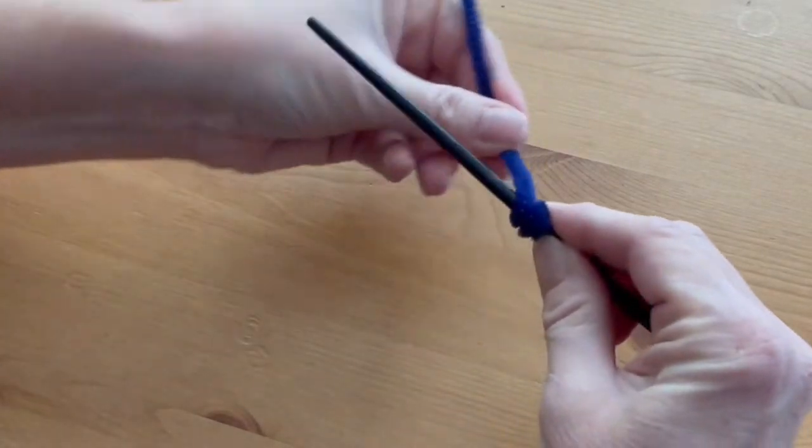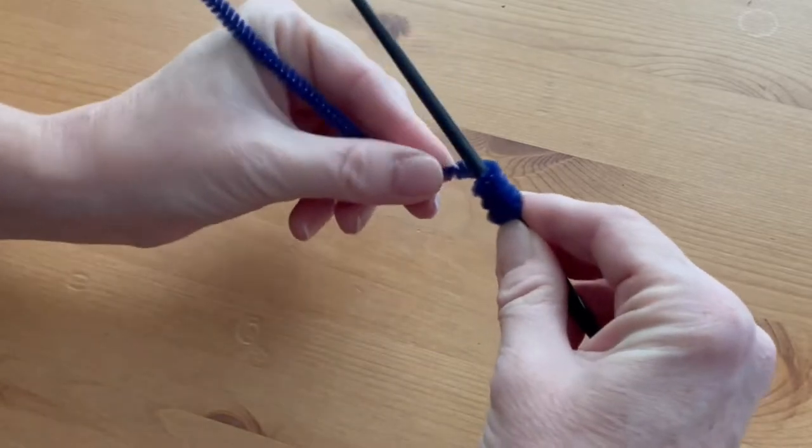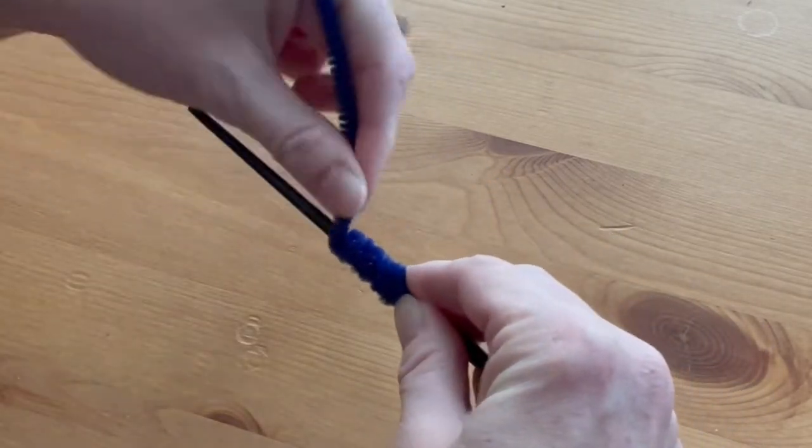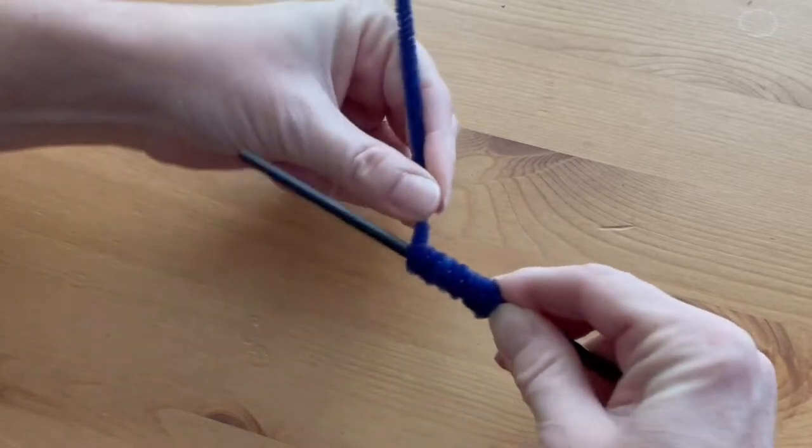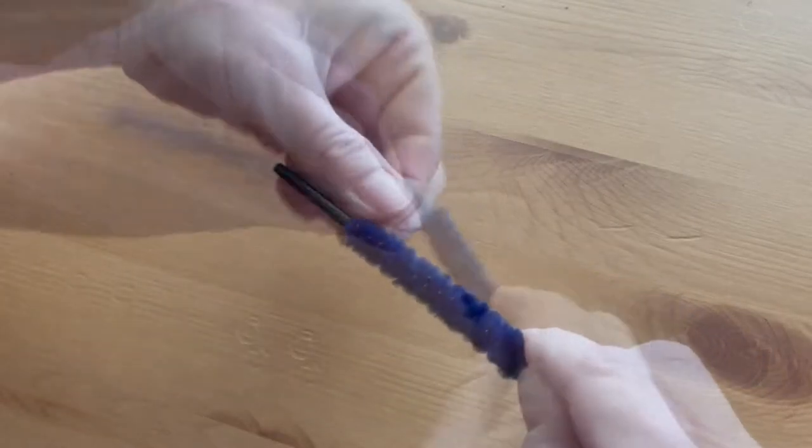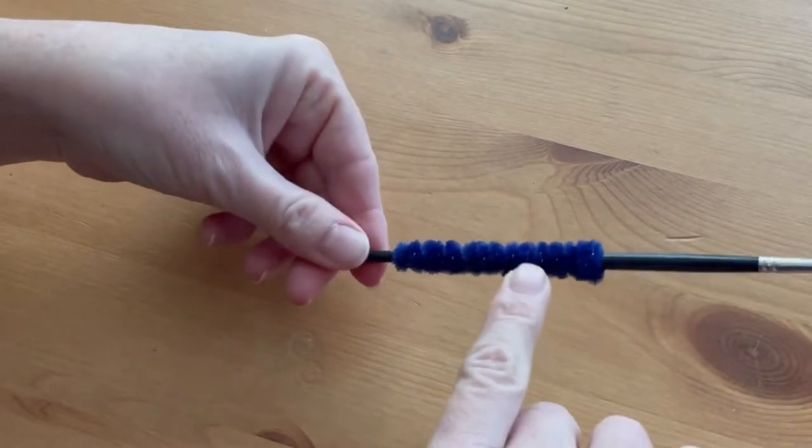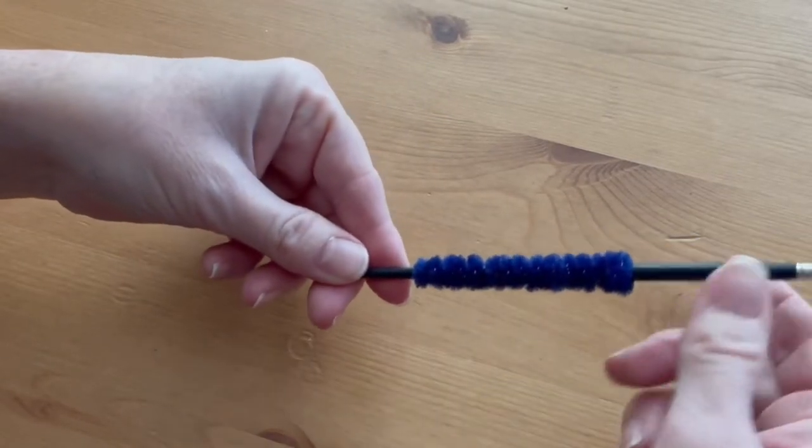Now you're going to coil the rest of the pipe cleaner around the paintbrush handle, just one coil right next to the other, as if you're making a spring. The body will get smaller as you go along the tapered end of the paintbrush.